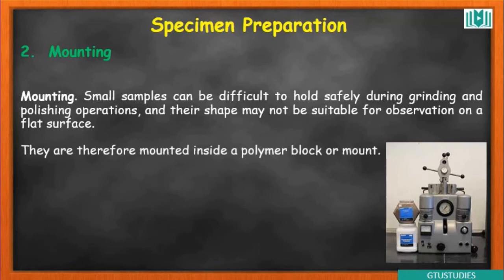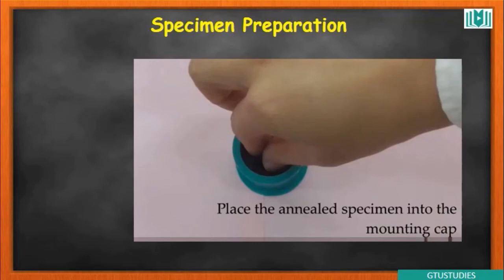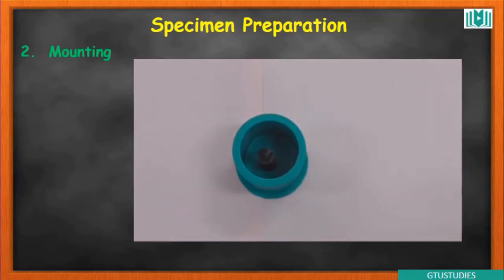Small samples are therefore mounted inside a polymer block, called a mount. The mounting process fixes the sample securely inside the polymer block so that it can be handled during subsequent steps. Once the sample is mounted, the next step can proceed.